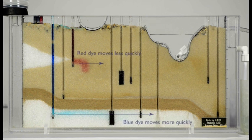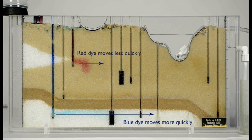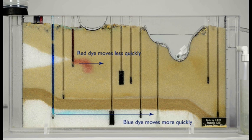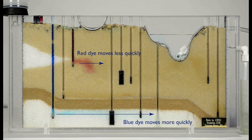In our sand tank, the dye moves more quickly through the gravel than the sand. It is easier for groundwater to flow through the gravel as there are bigger pore spaces and hence lower resistance.